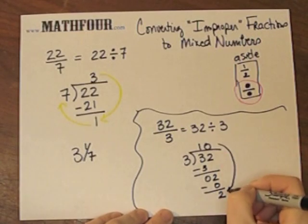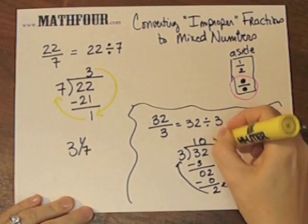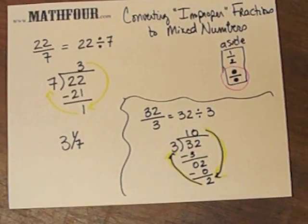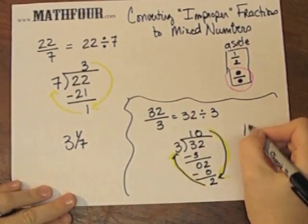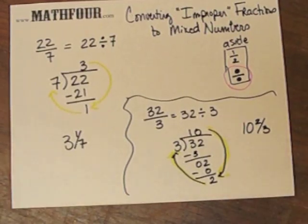And so I have 10 and 2 thirds. So this is my route to get my answer. So 10 and 2 thirds. And that's how to convert an improper bad fraction to a mixed number.